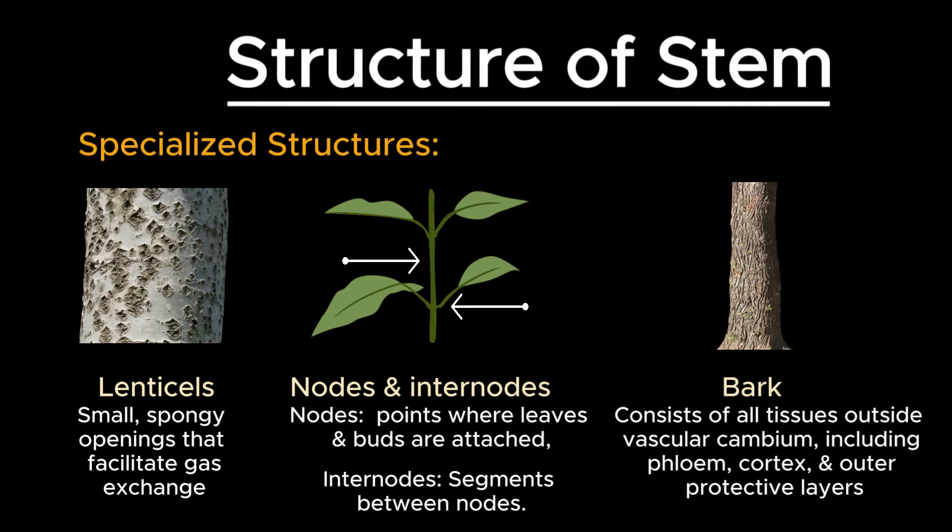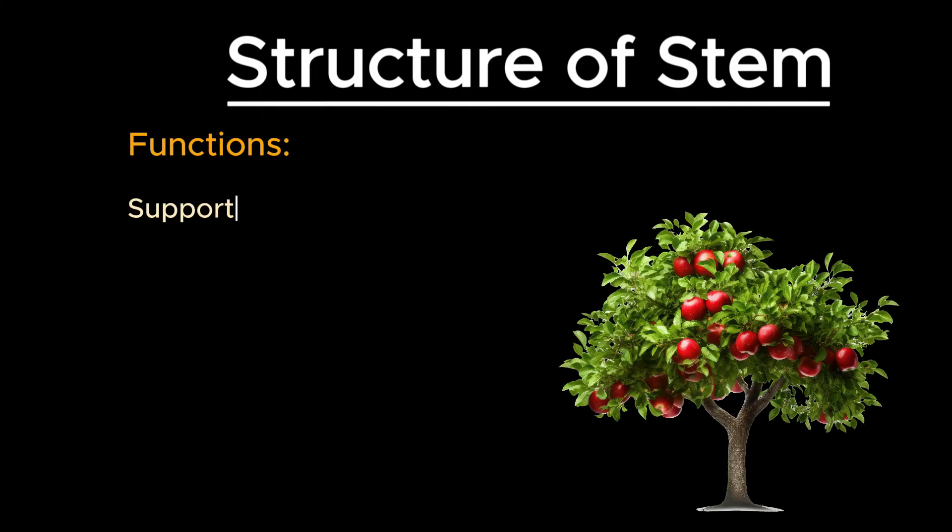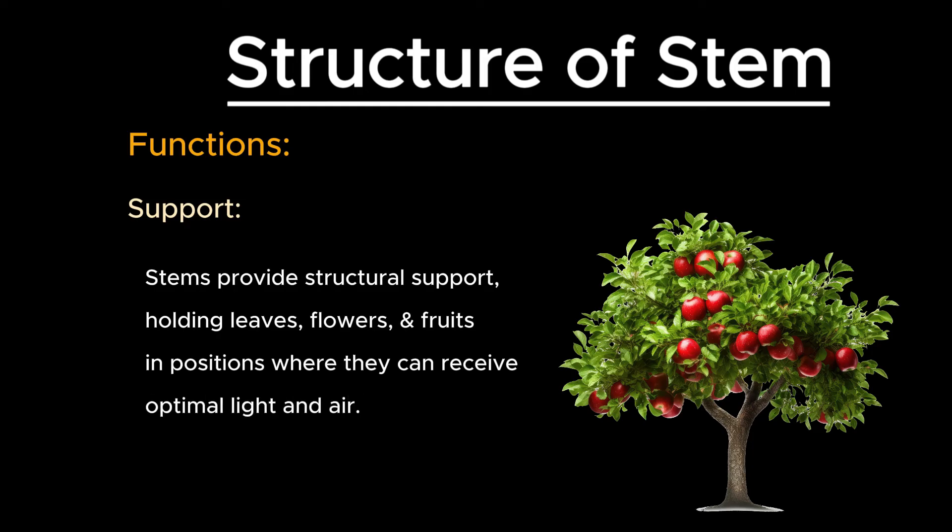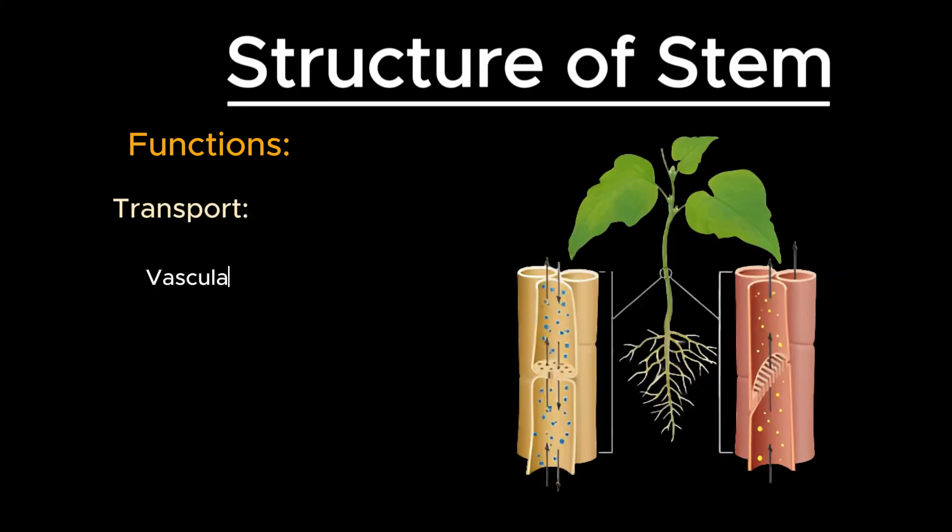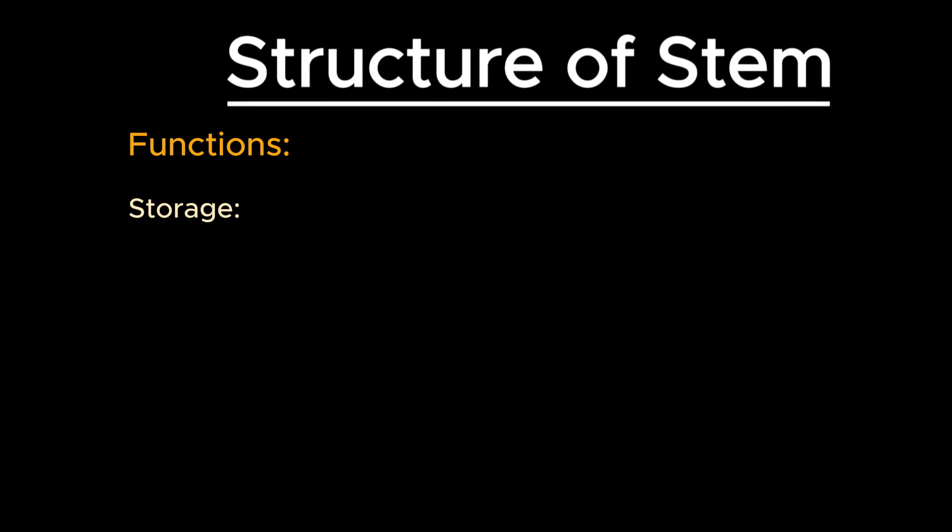Now, let's discuss some functions of the stem. Stems provide structural support, holding leaves, flowers, and fruits in positions where they can receive optimal light and air. Vascular bundles in the stem transport water, minerals, and nutrients throughout the plant.